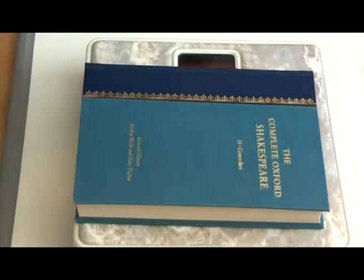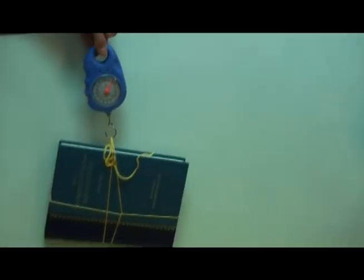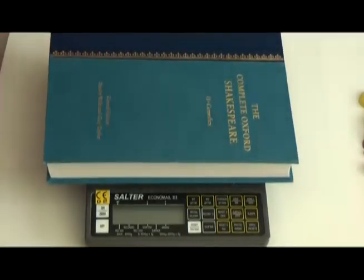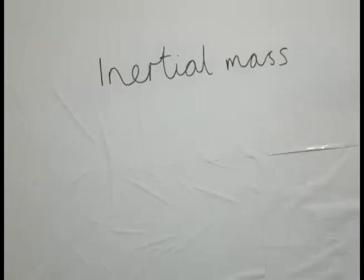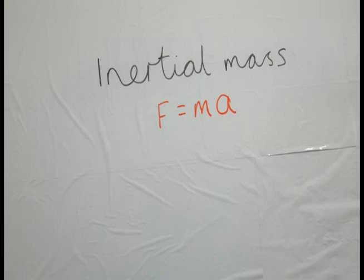But now we're going to look at some of the situations we use mass in, because actually there are different types of mass which we use in different situations. For example, we're going to look at inertial mass and gravitational mass. Inertial mass can be defined by the m in Newton's second law, f equals ma.